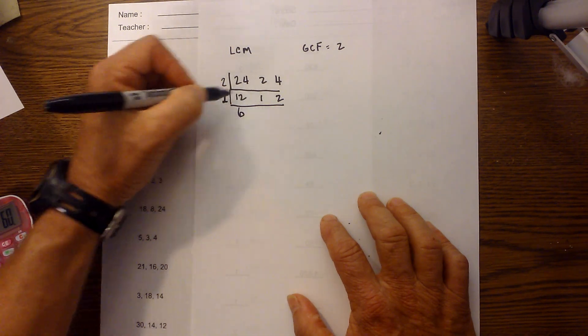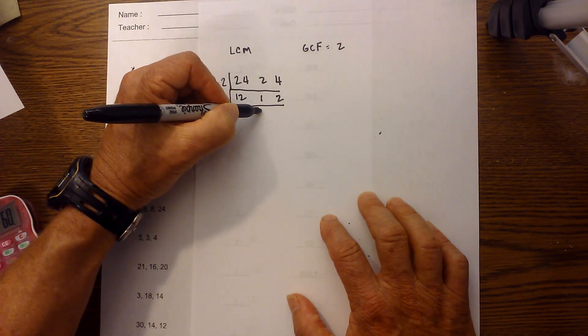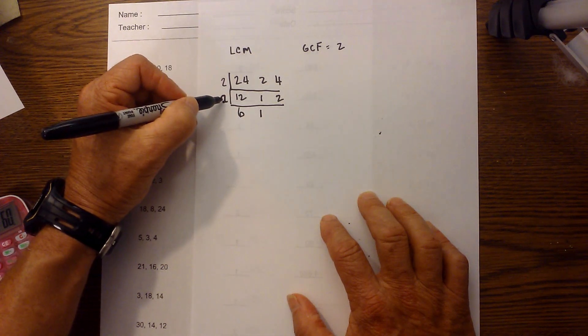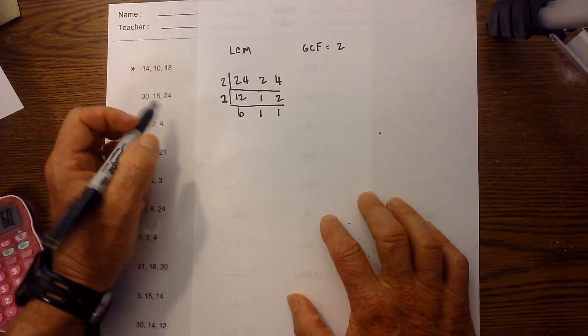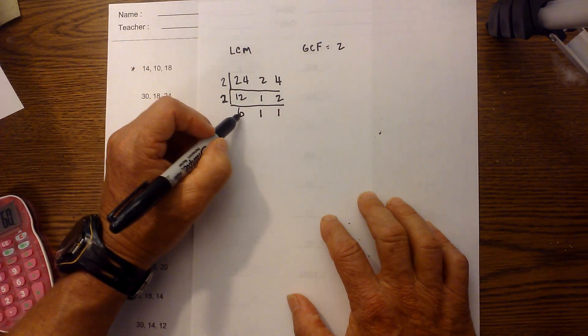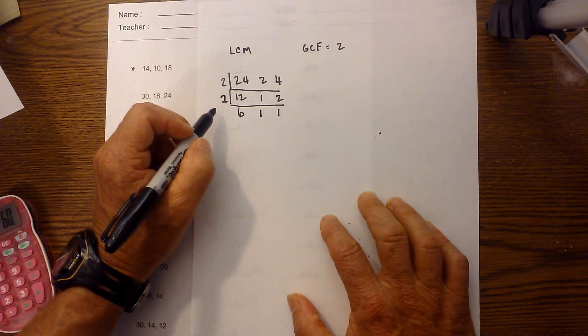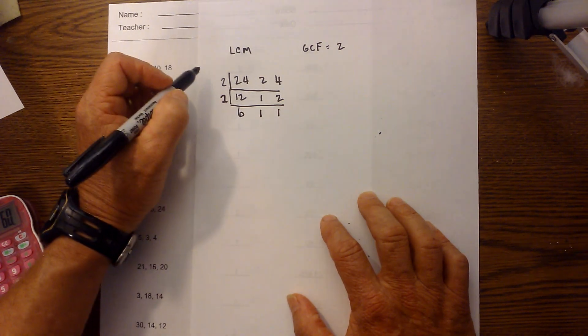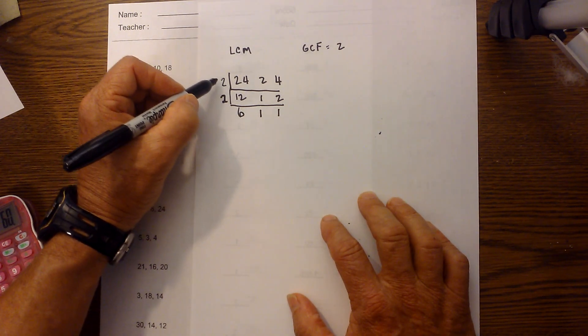2 goes into 12 six times. It does not go into 1, and if it will not go into the number you bring the number down as is. Then 2 goes into 2 one time. Now I do not have a pair that will divide into each other other than 1.